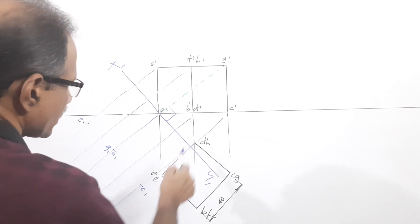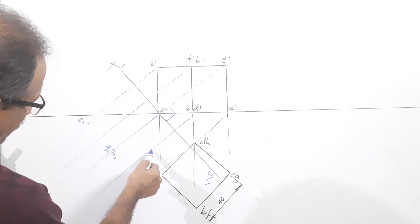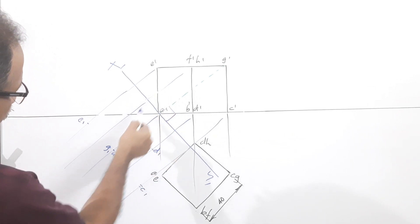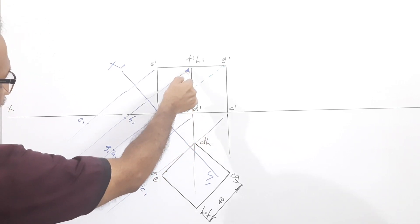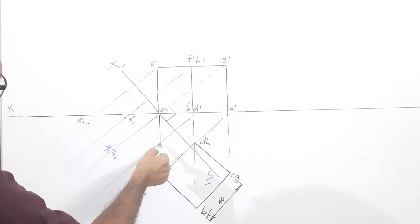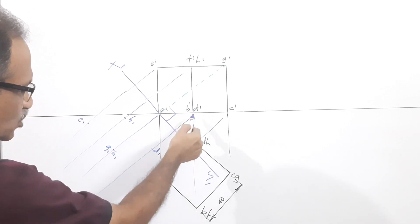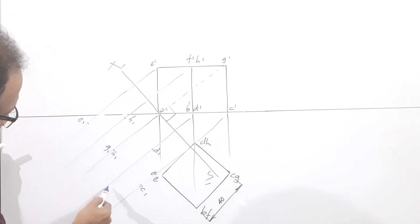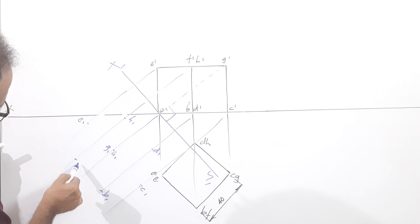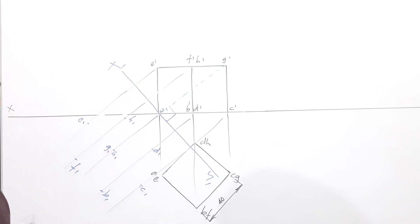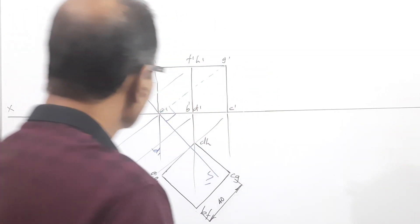Projectors through g-dash will pass through a-dash because that is the solid diagonal kept perpendicular to HP, and x1y1 is perpendicular to that. Now d and h are this much below — on the projector through d: d1, h1. Then b and f: b1, f1. You have got all 8 points on the cube. Now you have to connect them.